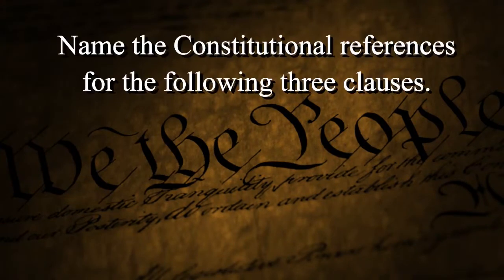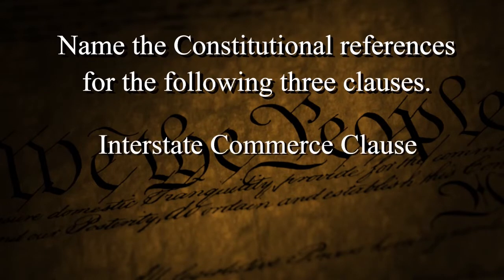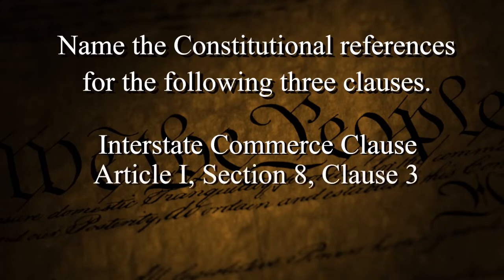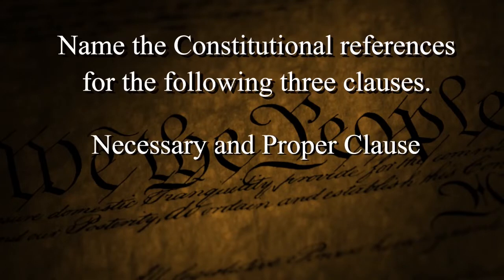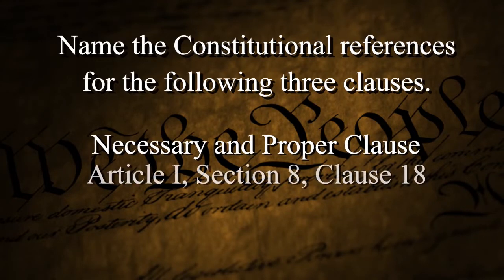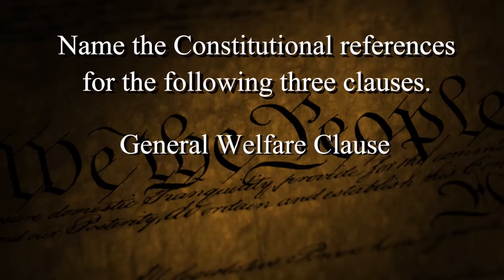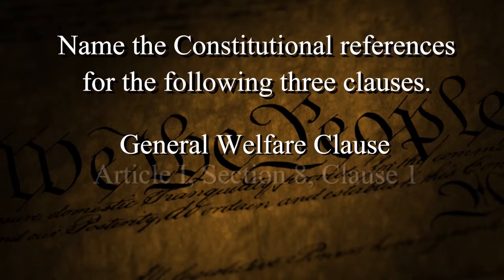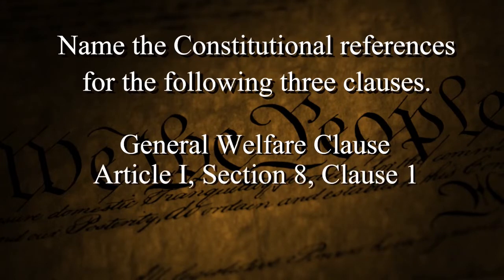Next question: name the constitutional references for the following three clauses. Interstate Commerce Clause — ICC 183 — Article 1, Section 8, Clause 3. Necessary and Proper Clause — one and eight are necessary — Article 1, Section 8, Clause 18. And General Welfare Clause — 181st Airborne — Article 1, Section 8, Clause 1.